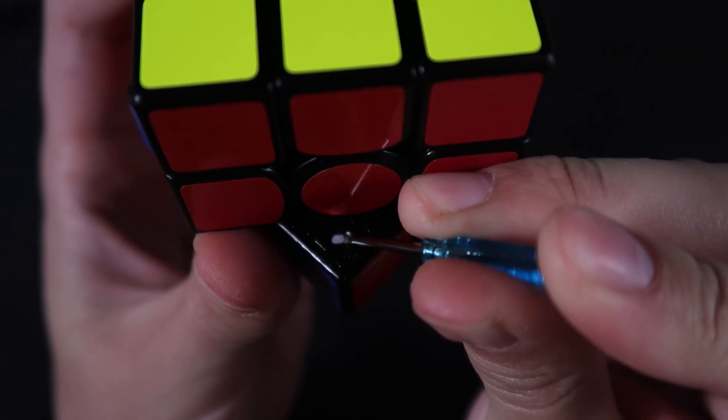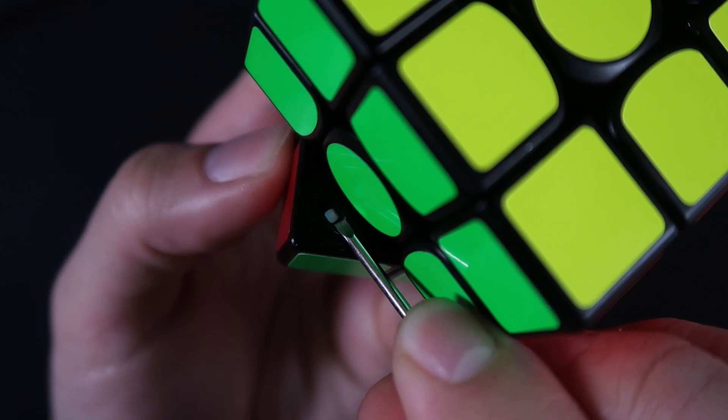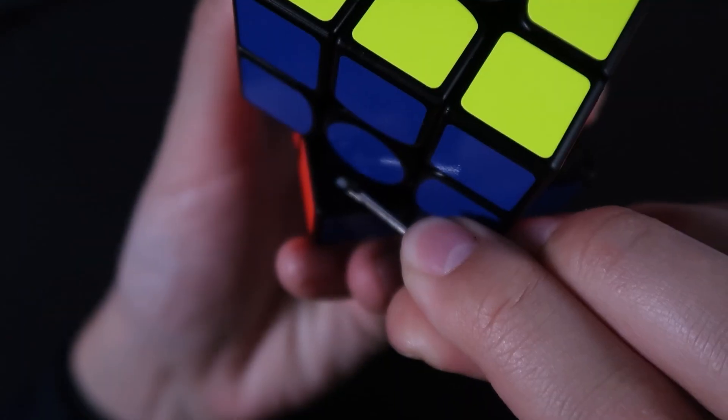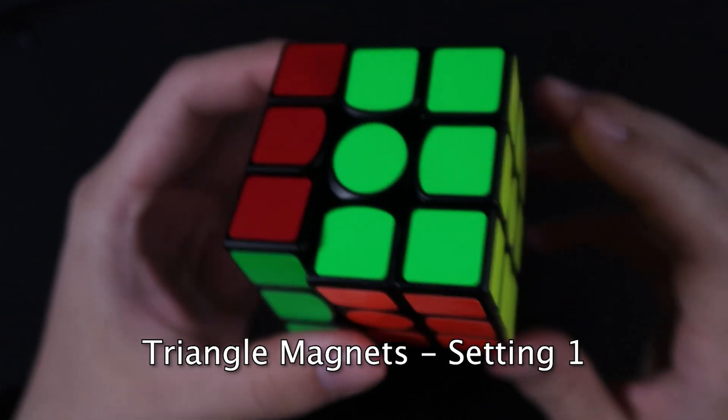I first used the screwdriver that was included to adjust the corner magnets. I like the default corner magnet rods that come with the cube, so here you can see that I adjusted it to the weakest setting, which is number one.